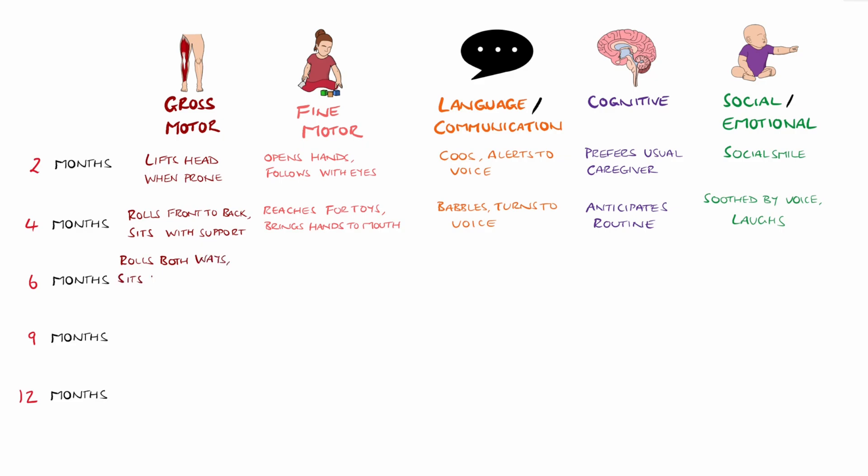At six months, gross motor milestones include rolling both ways and sitting without support—typically this needs to occur before nine months. Fine motor includes transferring objects hand to hand, and language includes responding to name and making vowel sounds. Cognitively, they do look for dropped objects, and socially they recognize familiar faces and express emotions.